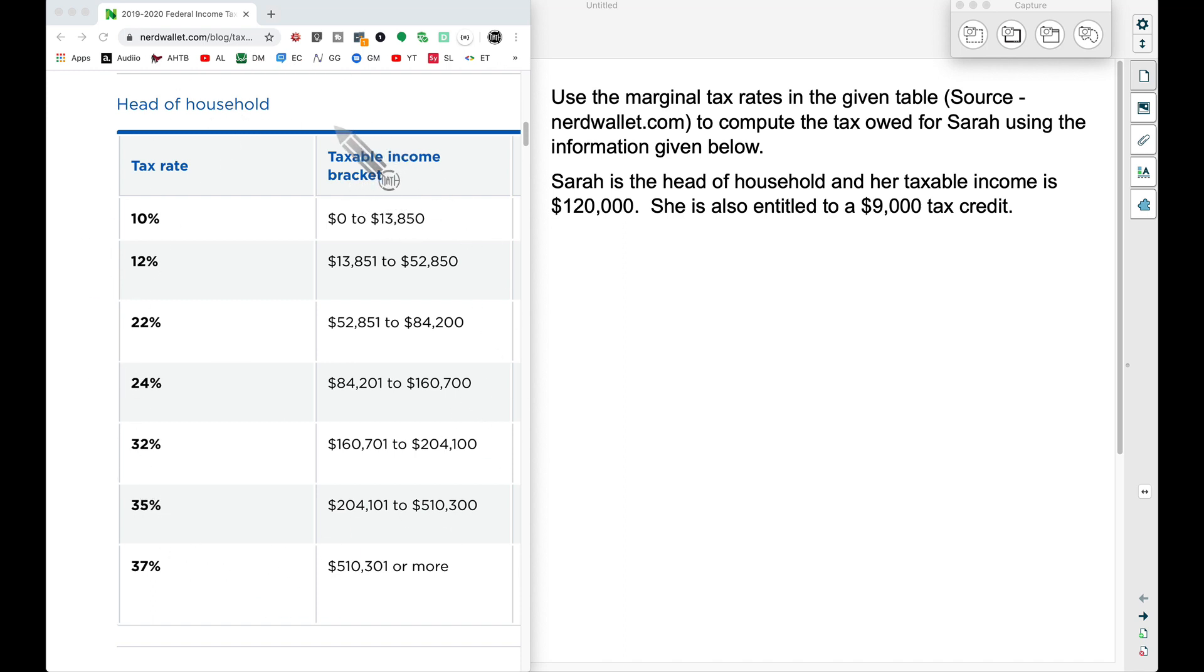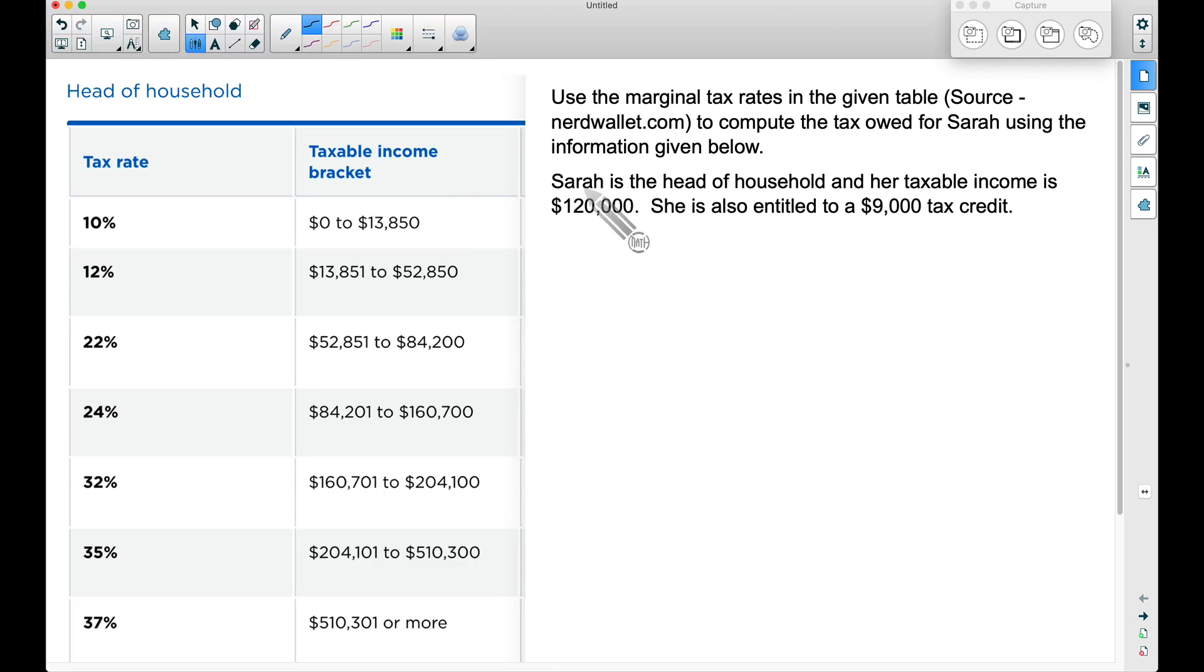What we want to do is use this table here to find the amount of tax owed by Sarah in this situation. Since Sarah is the head of household, that is the table I have pulled up over here. The numbers you see here can be different if you're filing single or filing jointly, and it also changes from year to year.